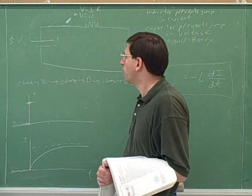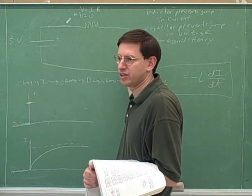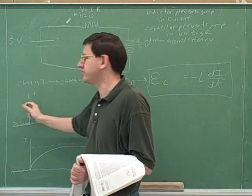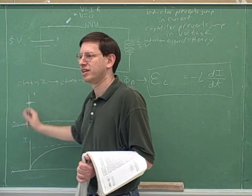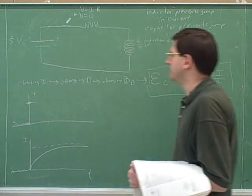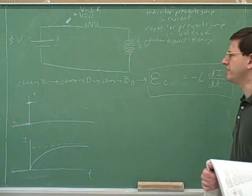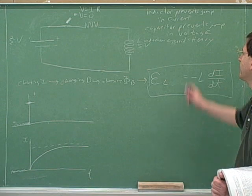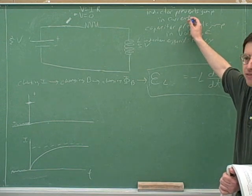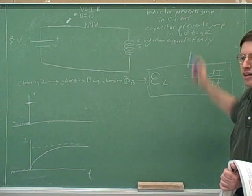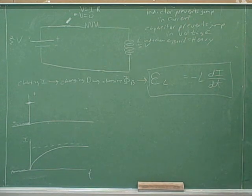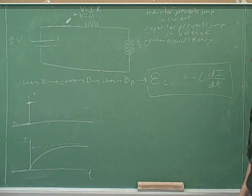Of course, while the switch was open there was no voltage, which means the voltage has jumped. Do inductors allow the voltage to jump? Yes — they only prevent the current from jumping. It turns out that the only way to prevent the current from jumping is to allow the voltage to jump. We just showed that.